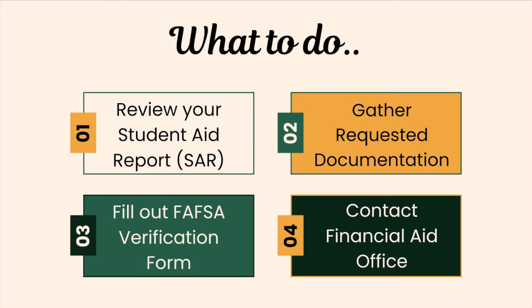Next, you need to gather requested documentation. If selected for verification, you will be asked to submit documentation that proves the information you submitted on the FAFSA was accurate. The areas that you might need to confirm include adjusted gross income, income taxes paid, household size, number of household members in college, and tax-exempt interest income.